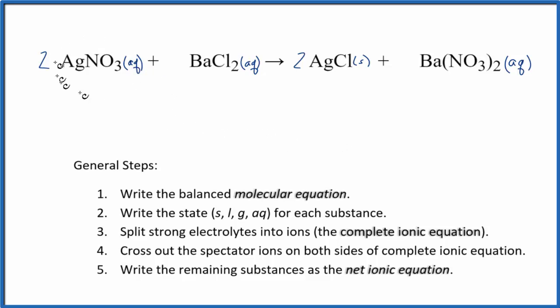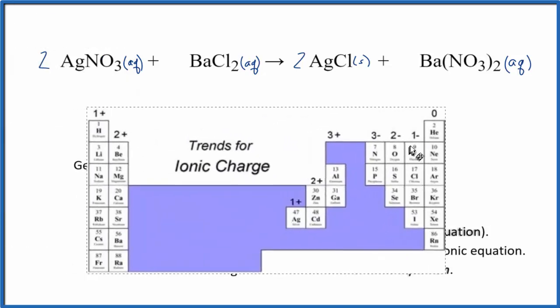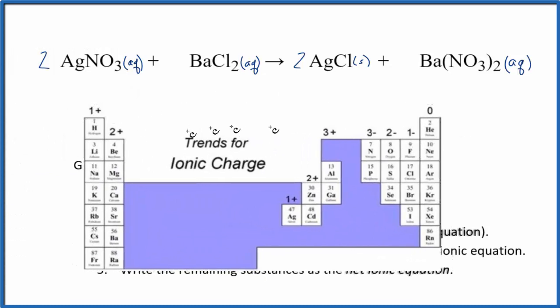When we look at the periodic table, silver is a transition metal, but it's an exception - it always has a 1+ ionic charge. So silver is +. Then the nitrate, NO3, if you look that up on a table of polyatomic ions, you'll see the nitrate ion is always negative 1. That's a good one to remember.